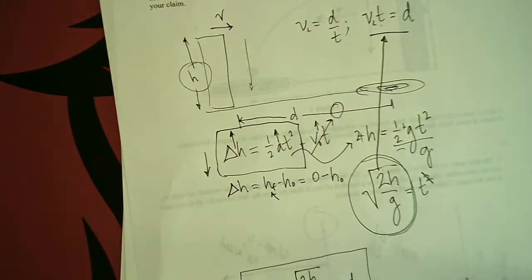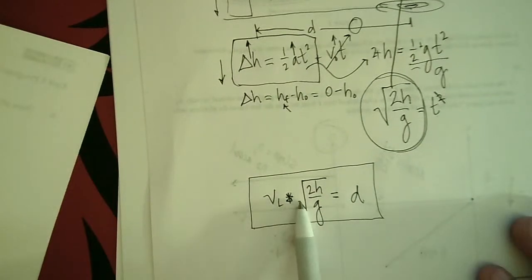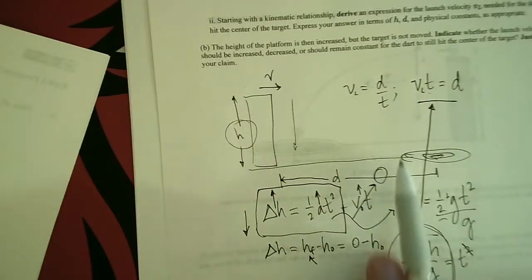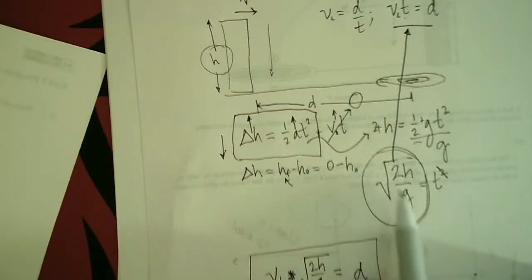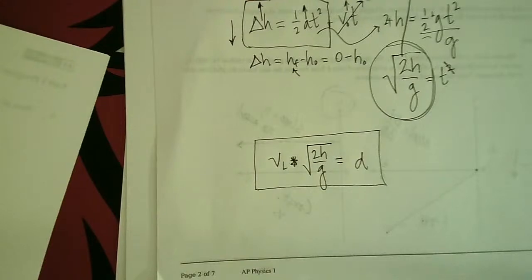So now we substitute this value for T in our original equation. So we end up with launch velocity times time, and instead of time we are using this substitution for time here from the second equation, is equal to the distance. That is the derivation of the formula we want.